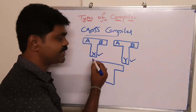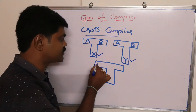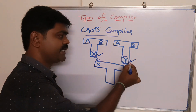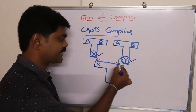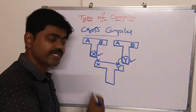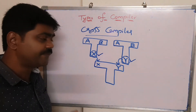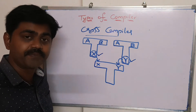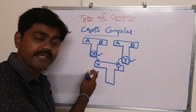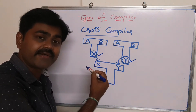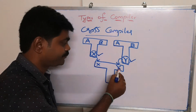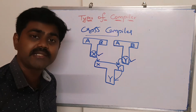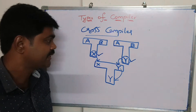Now the result cross compiler will be: the implementation of compiler 1, X, becomes our source; the implementation of compiler 2, Y, becomes our target; and whatever the target is, that becomes our implementation. So in the resultant cross compiler, X is the source, Y is the target, and Y is the implementation. This is the cross compiler.